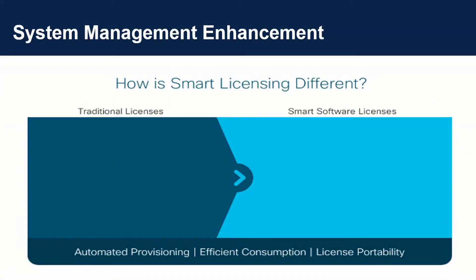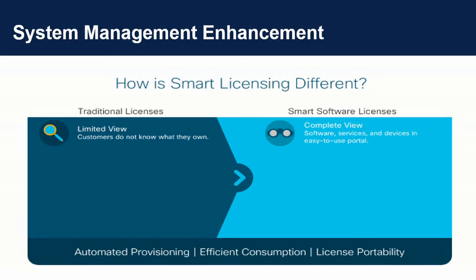How is smart licensing different? With traditional licenses, you have a limited view — customers do not know what they own unless they pull a bill of materials or a sales order. With smart licensing, you have a complete view of software, services, and devices in an easy-to-use portal.